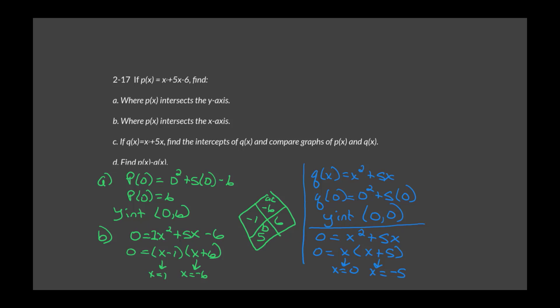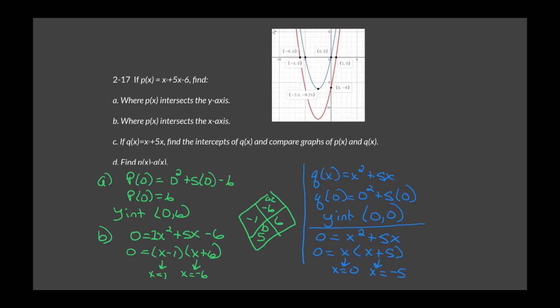Let's look at the graph. The blue is our P of X — the work in blue goes with the blue graph. The green goes with the red equation. I've also plotted the minimum, the vertex for the blue equation. Look at the X intercepts and Y intercepts — they're exactly what we calculated.